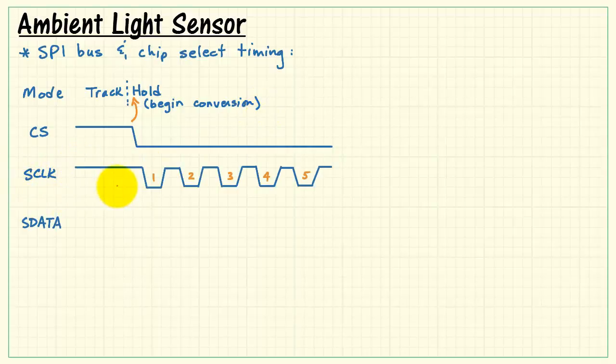Looking at the serial clock. Normally this is a high signal. That is idle high. And then after we drop the chip select, we can start initiating the serial clock pulses.